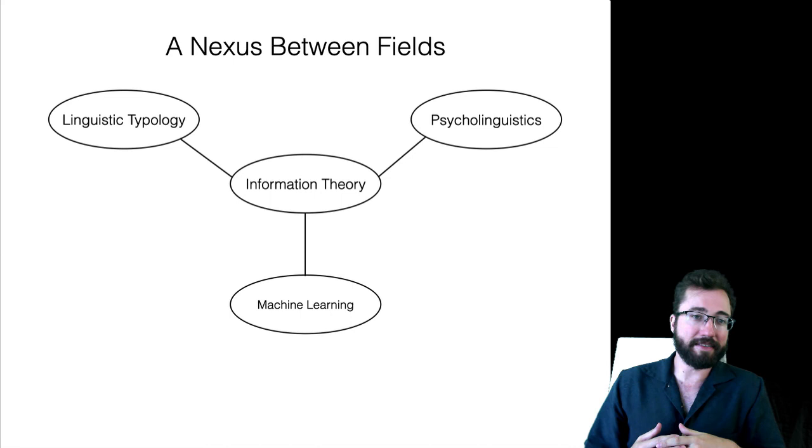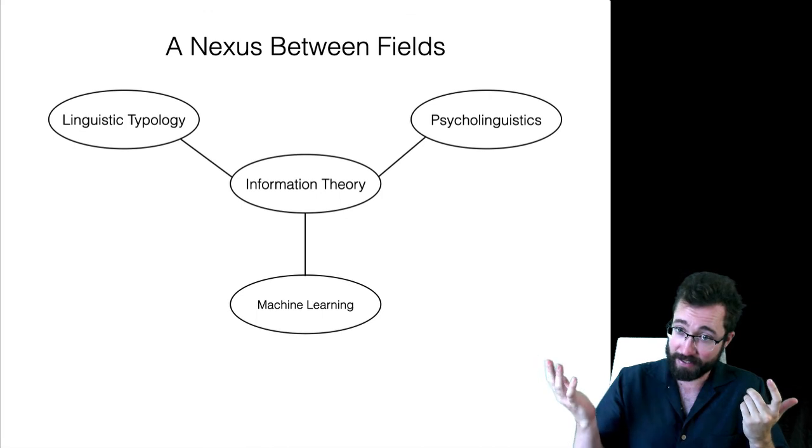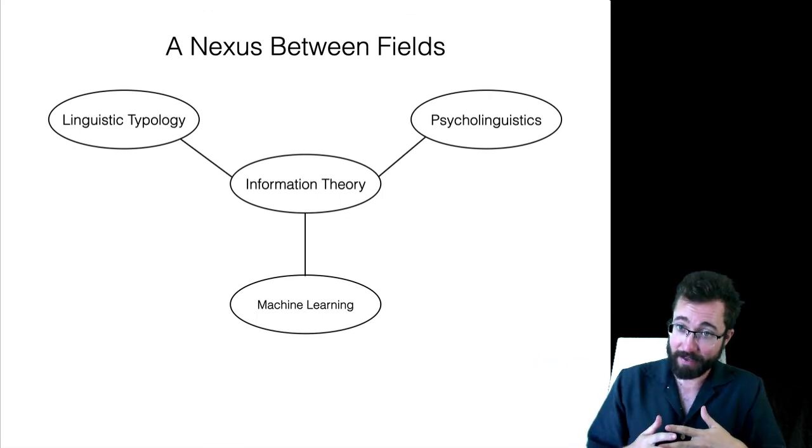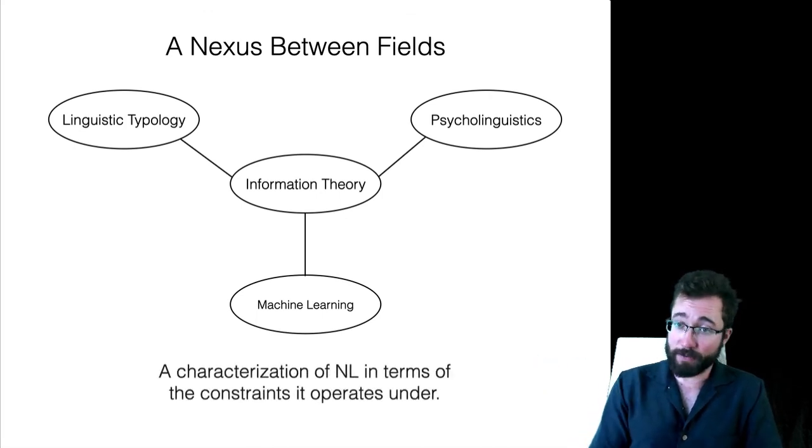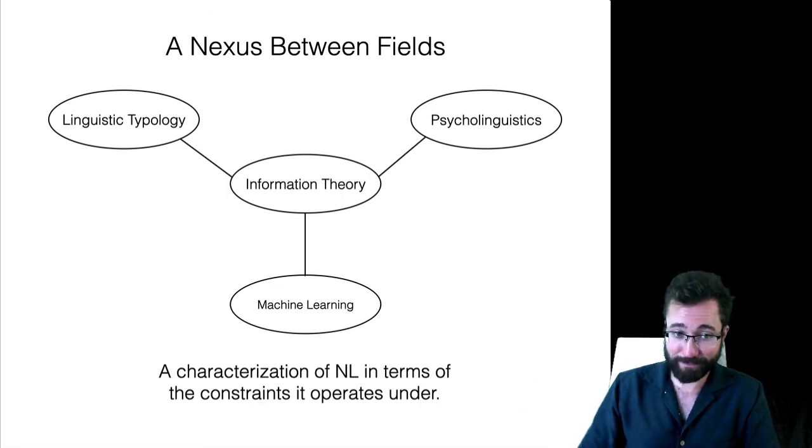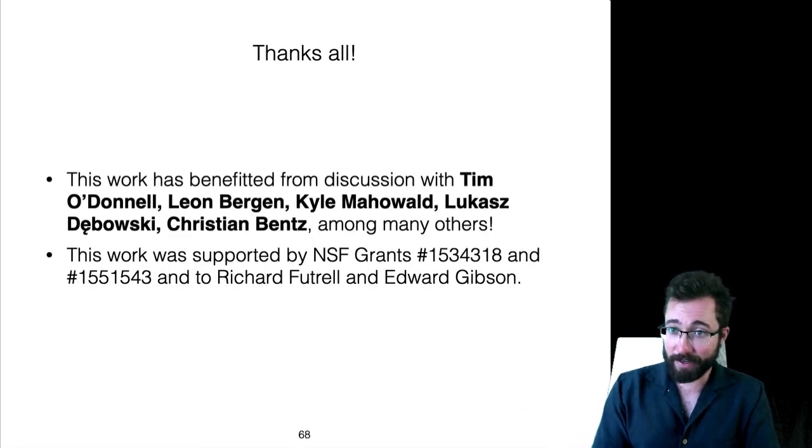What my goal is in this kind of work, what I hope I've made some progress towards, is using information theory to create a nexus among these different fields, among typology, psycholinguistics, and machine learning. In doing so, the hope is to develop a characterization of what natural language is in terms of the constraints it operates under, where each of these three fields has a lot to contribute to this project.